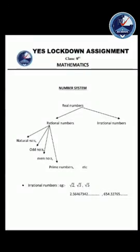Your assignment will be based on this chapter - number system, the first chapter in 9th class. So the numbers we are studying now are called real numbers. All the numbers are real numbers. Other than real numbers, it is only complex numbers, which we study only in 11th class. So till 10th class, we will be studying about real numbers only. Real numbers are divided into two types: one is rational numbers, the other is irrational numbers.